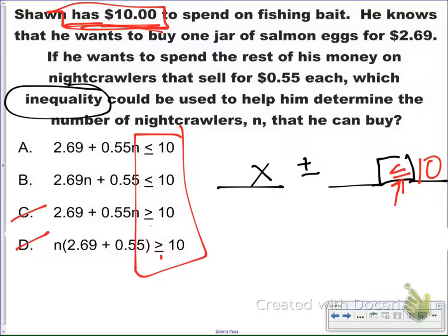Now, we keep moving along. So we know he wants to buy one jar of salmon eggs for $2.69. That tells me something really important as well. The one jar of salmon eggs for $2.69, he's not buying a second one, he's not buying a third one. That is a one-time cost. So because of that, that is going to be what I call my constant. I'm going to be adding $2.69. So I'm going to be plus $2.69 because all of it together needs to add up to that total of $10. So I know I'm going to be adding a positive $2.69.